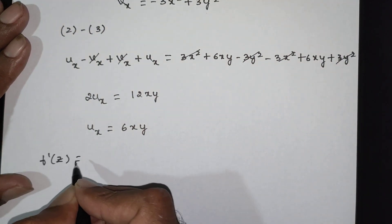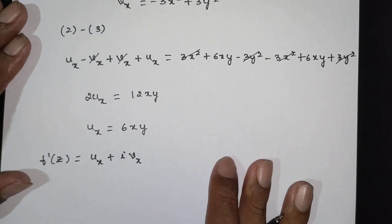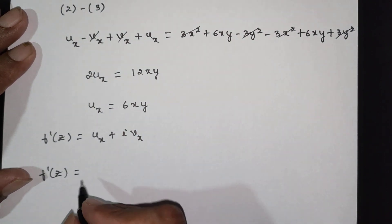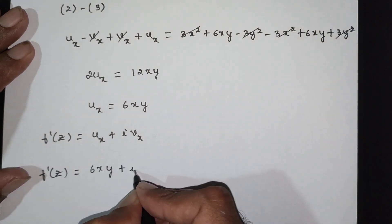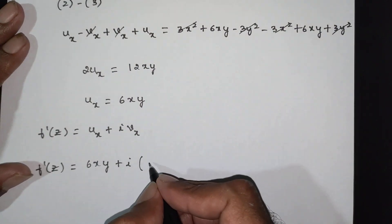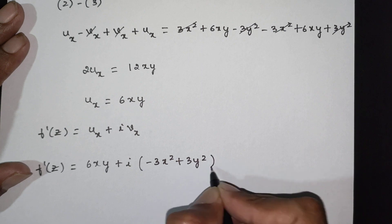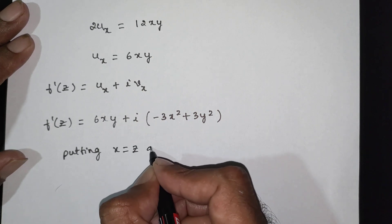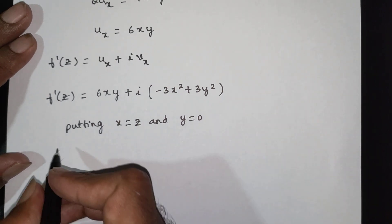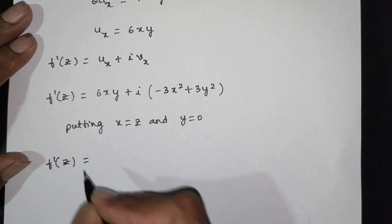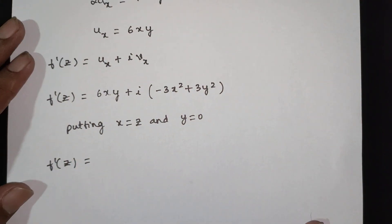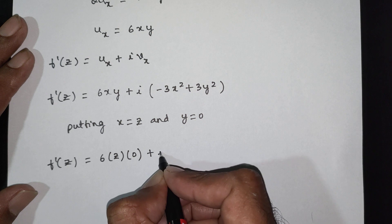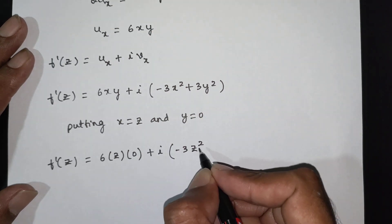Therefore f dash of z is equal to ux plus i into vx. Substituting ux equals 6xy and vx equals minus 3x squared plus 3y squared. Now putting x equal to z and y equal to 0: f dash of z equals 6 times z times 0 plus i times (minus 3z squared plus 0), giving f dash of z equal to minus 3i z squared.